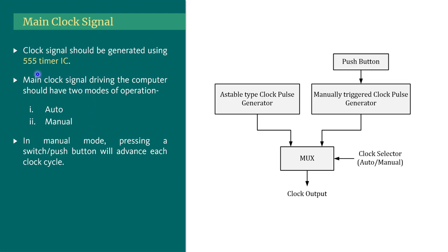Our clock signal should be generated using a 555 timer IC. In your electronics course these things were already covered — generating a clock pulse using a 555 timer IC, like an astable multivibrator or monostable multivibrator. As already discussed, there should be two modes of operation for the main clock: one is automatic and the other is manual.